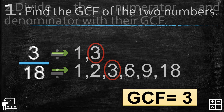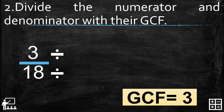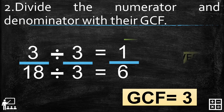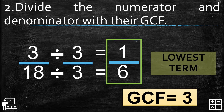Now let's proceed to step 2: divide the numerator and denominator by their GCF. Our GCF is 3, so we divide by 3. 3 divided by 3 equals 1, and 18 divided by 3 equals 6. So the lowest term of 3 over 18 is 1 over 6.